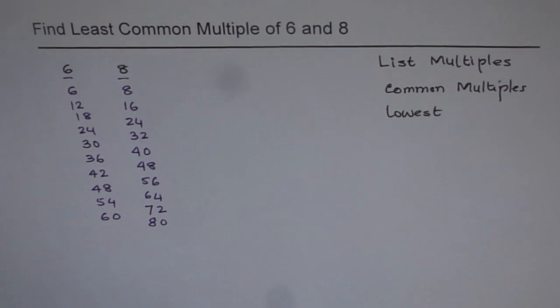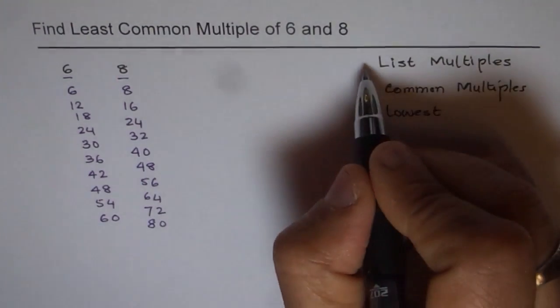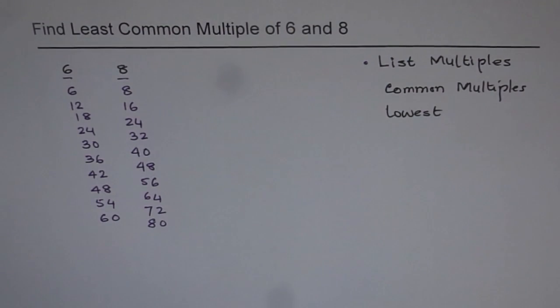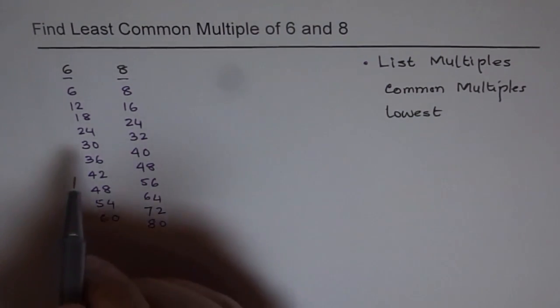So we got a list of multiples, so that is our first step, that is list multiples. Now from this list, let's figure out which are the common ones. So now have a look, see for common multiples.